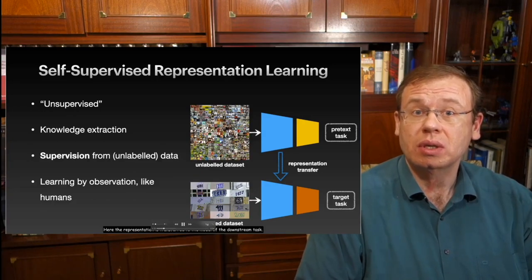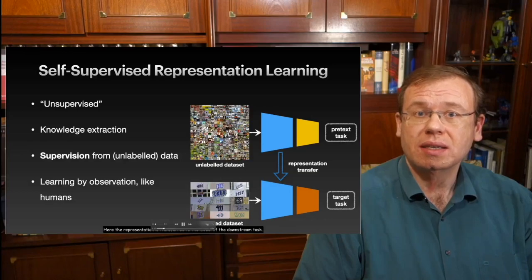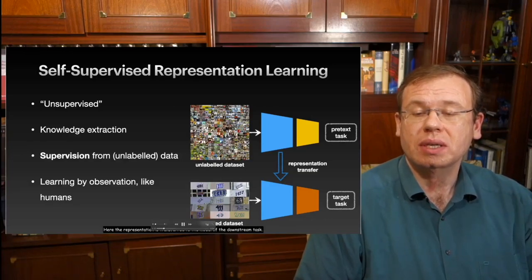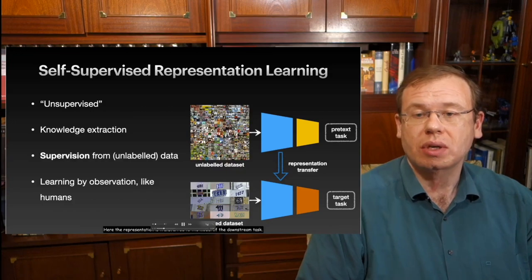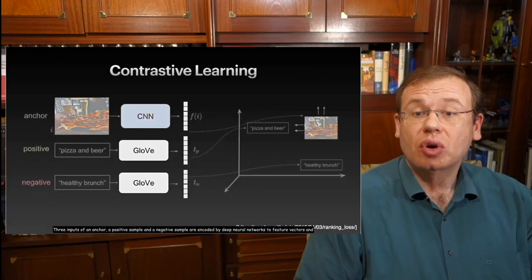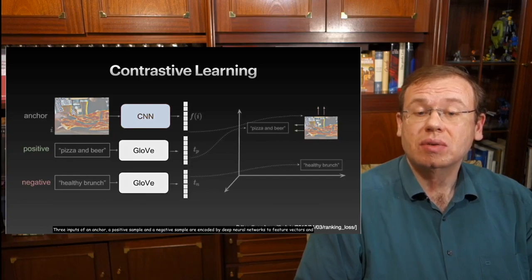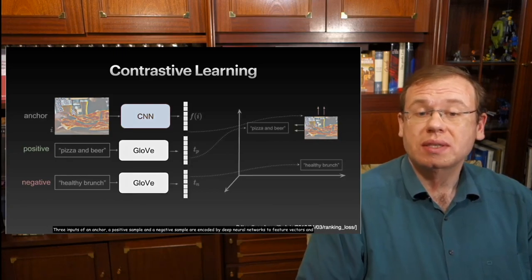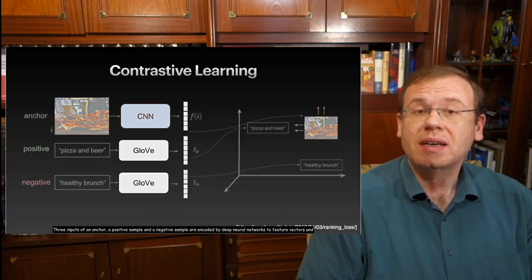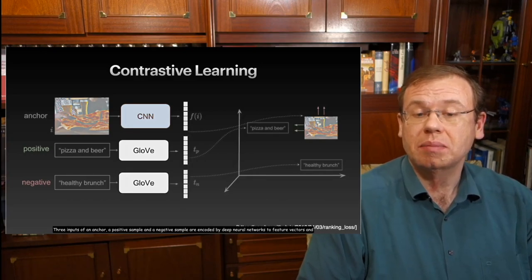Something where you don't need labels. So you can maybe predict the present from the past or you can do jigsaw puzzles and all kinds of things for training the network. But you generally try to learn a representation that is able to help in this pretext task. But it's not the actual task that you want to work on. And later you take the information that you have trained in the pretext task and you transfer it to your real application.